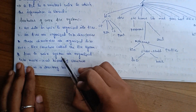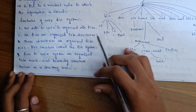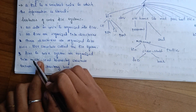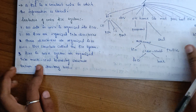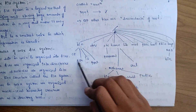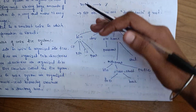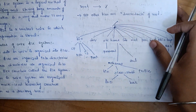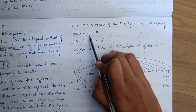Files in a Unix system are organized into a multi-level hierarchy structure known as a directory tree. We organize the file system in Unix into multi-level hierarchy — first level, second level, and so on. At the very top of the file system is a directory called root.